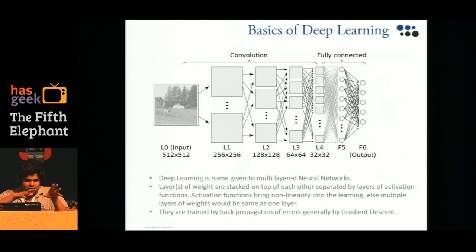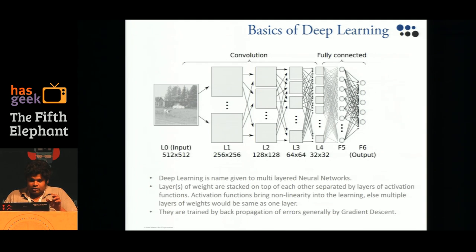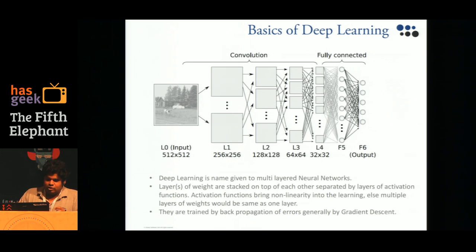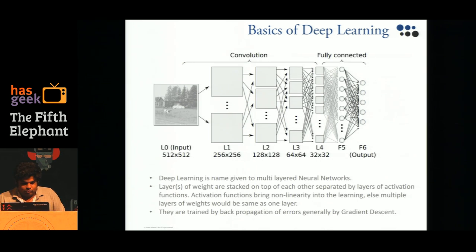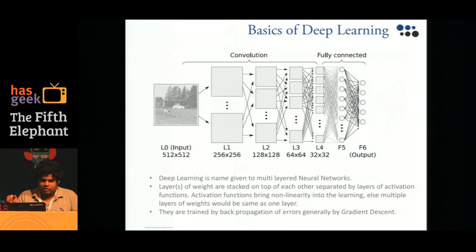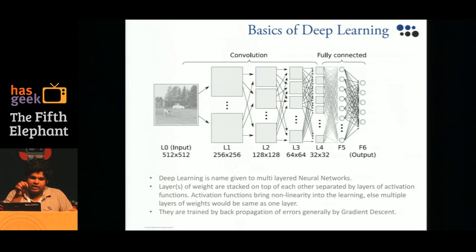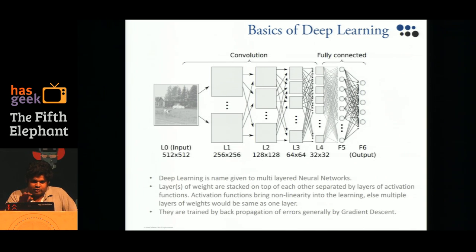That covers all the algorithms. Now, since most of you likely want to hear more about the deep learning part, I've put up some slides on the basics of deep learning. The algorithms we described are neural networks with multiple layers of weights, separated by activation functions. The activation function is what brings non-linearity into the network; remove it and you just have a set of linear transforms.